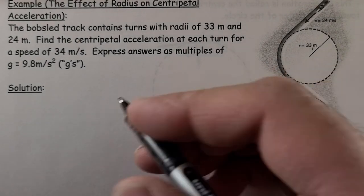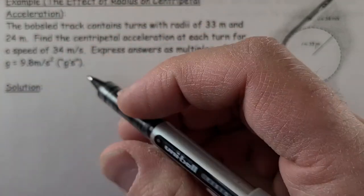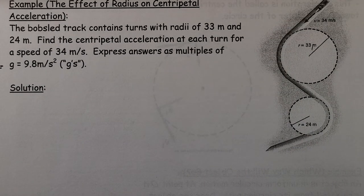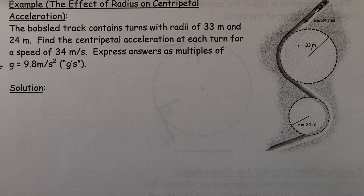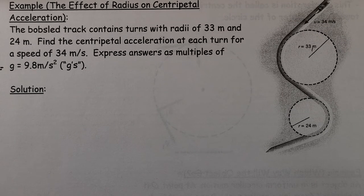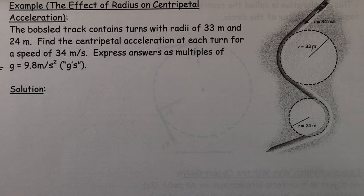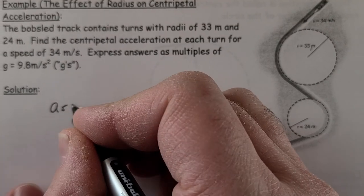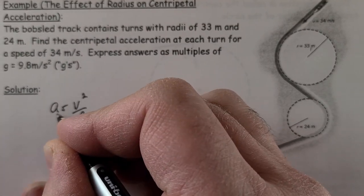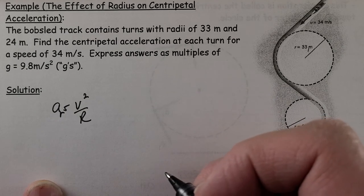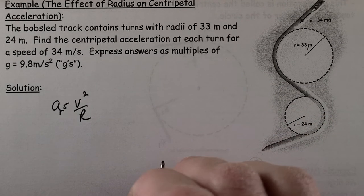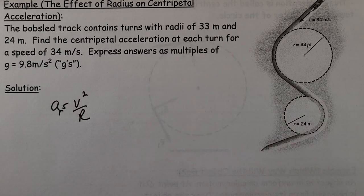We want to have our a values in terms of so many g's. So you feel the effects of 1g right now being on the surface of the planet. When you sit in a chair, you're feeling 1g of force. So we're going to see how this compares. Again, a equals v squared over r, and I can put ar here for radial acceleration.